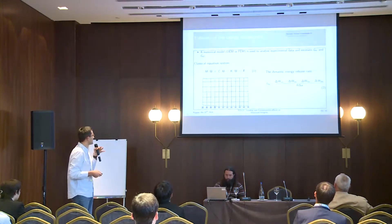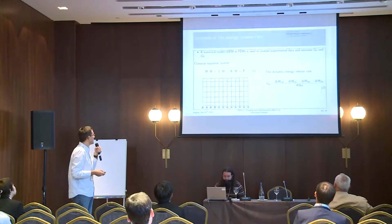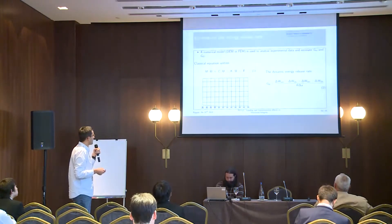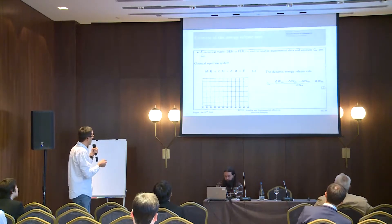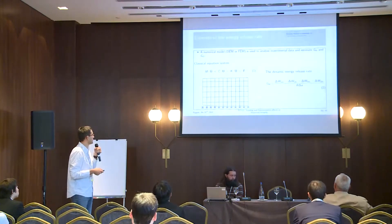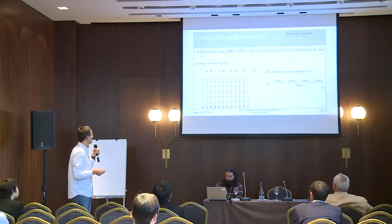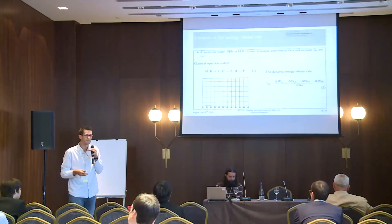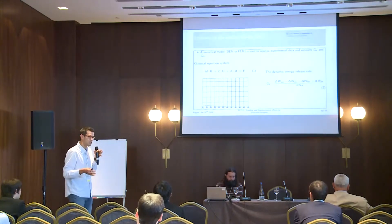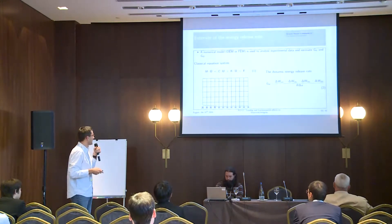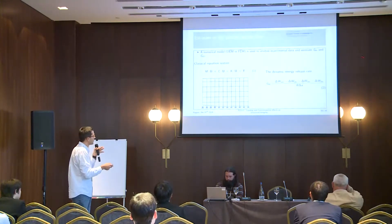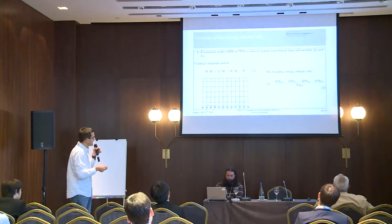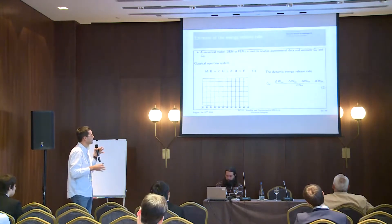After that, it is necessary to estimate the dynamic energy release rate taking into account inertia effects. If possible experimentally that is ideal, but sometimes it is difficult because of the rapid propagation. We often use a numerical model — either the discrete element method or the finite element method — to analyze experimental data. We solve the classical equation of motion, but this model is not predictive. We impose the crack opening knowing boundary conditions and crack path history from experimental data, then perform a global energy balance on the whole structure to estimate the dynamic energy release rate as a function of B·ΔA, which is the crack length times the sample thickness, representing the projected surface area.